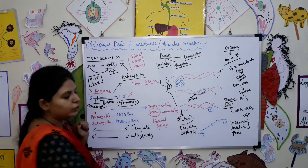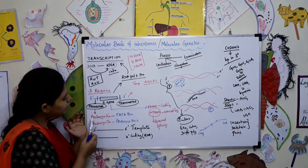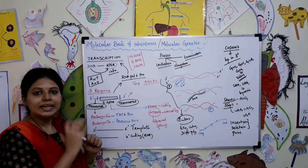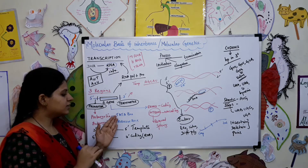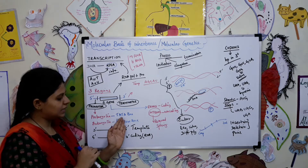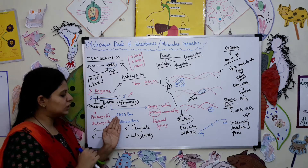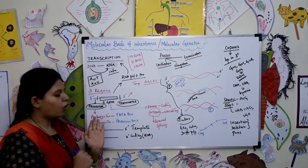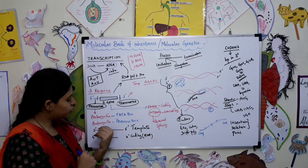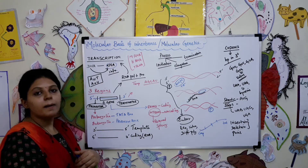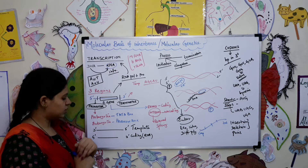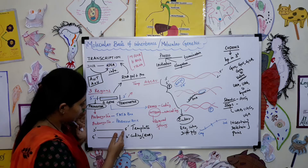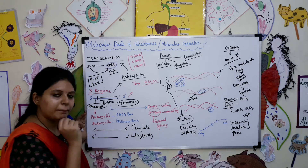We will see prokaryotes and eukaryotes separately. In prokaryotes, the promoter region is rich in adenine and thymine, and it is called the TATA box. In eukaryotes, the promoter region is called the Pribnow box.